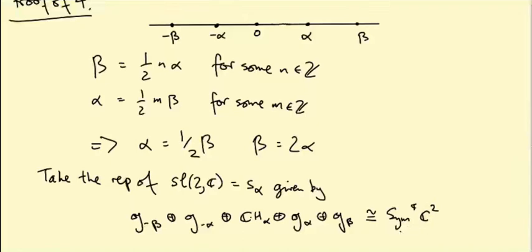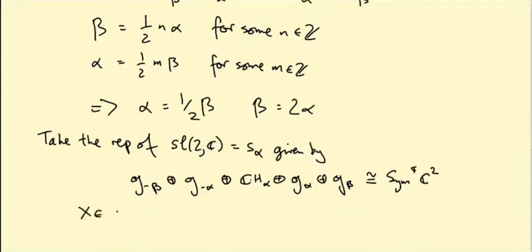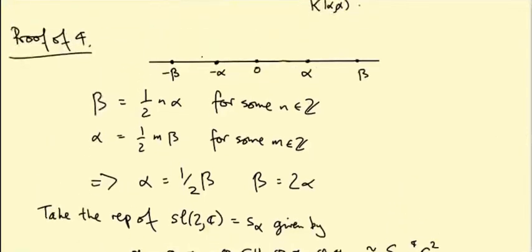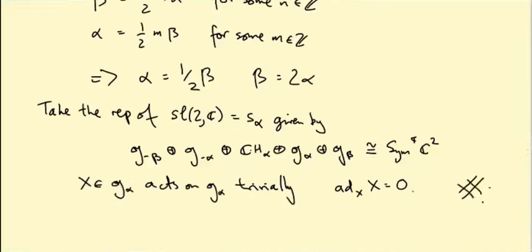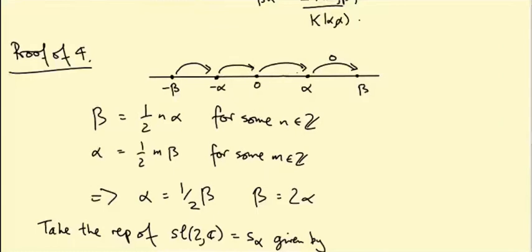We know all these root spaces are one dimensional. So this root diagram is just the root diagram of sym^4 C^2. So by our classification of SL2C representations, that's what this representation is. However, X, which lives in G_alpha, acts on G_alpha trivially. Because X generates G_alpha as a vector space. So ad_X of X is zero. In other words, if you look at the action of SL2C on this representation, X is translating to the right. But it's actually zero at this point, going from this weight space to this weight space, the map is just zero. But that's not true for sym^4 C^2. If you calculate what happens for sym^4 C^2 and how X acts on this weight space, it doesn't act as zero. So that's a contradiction.